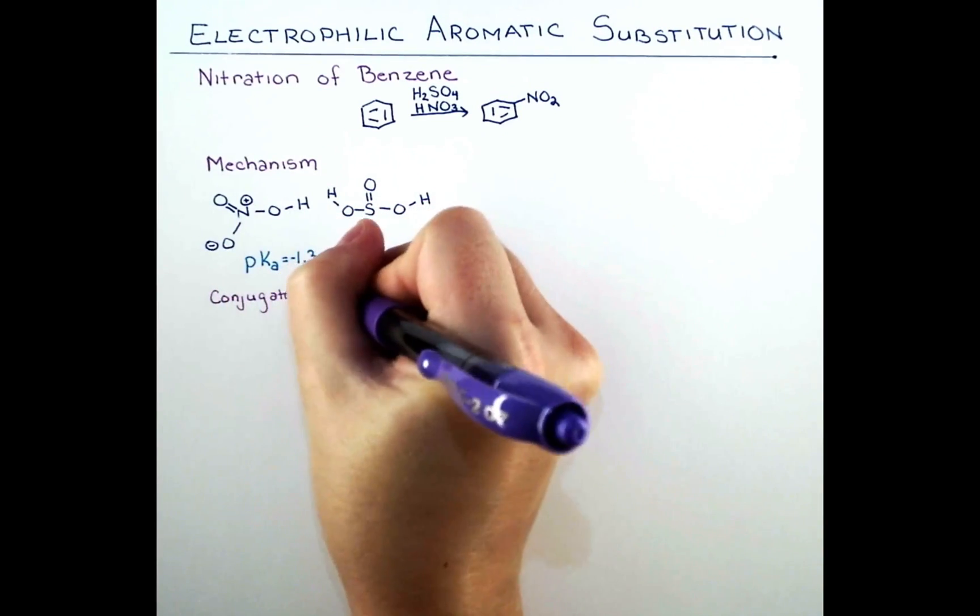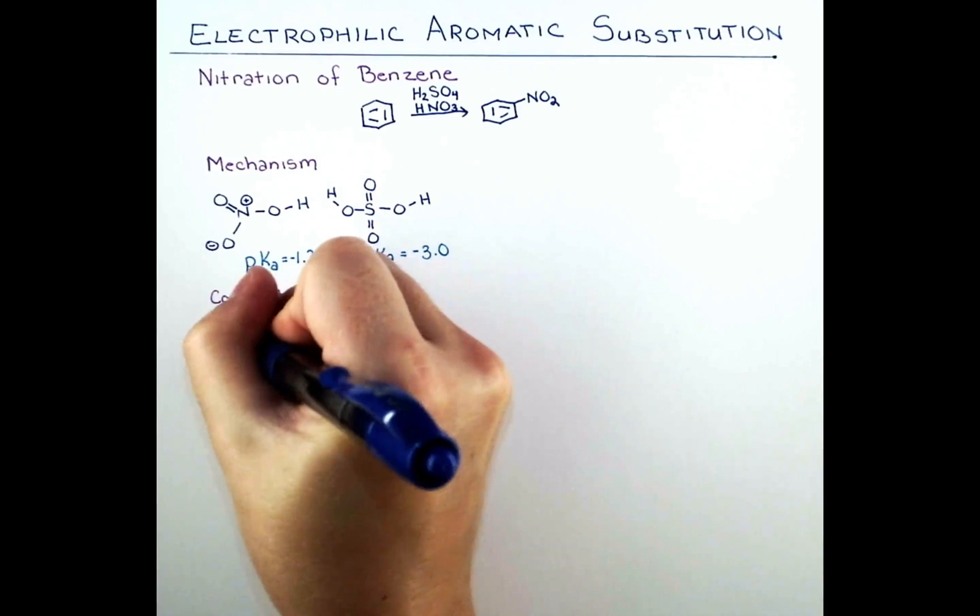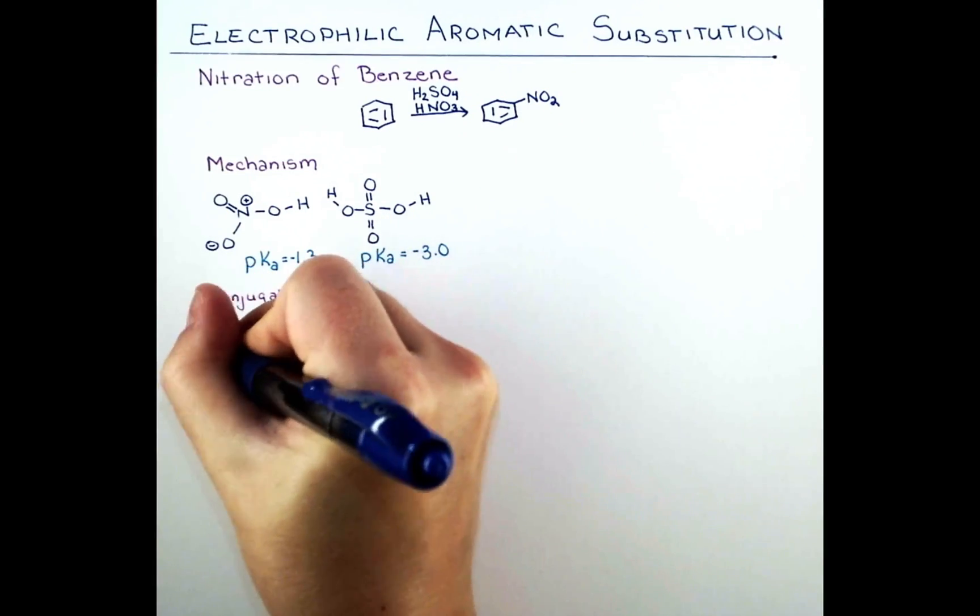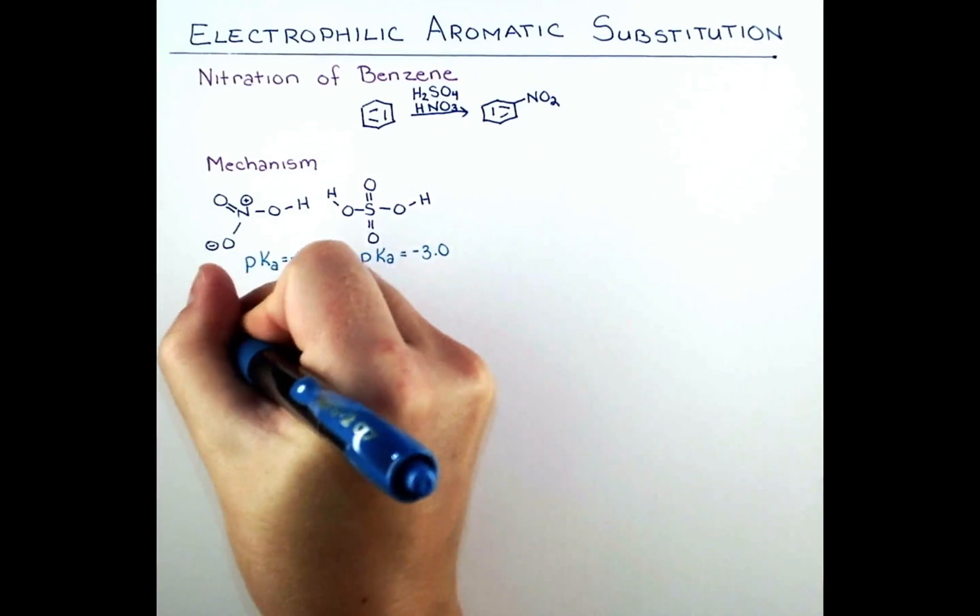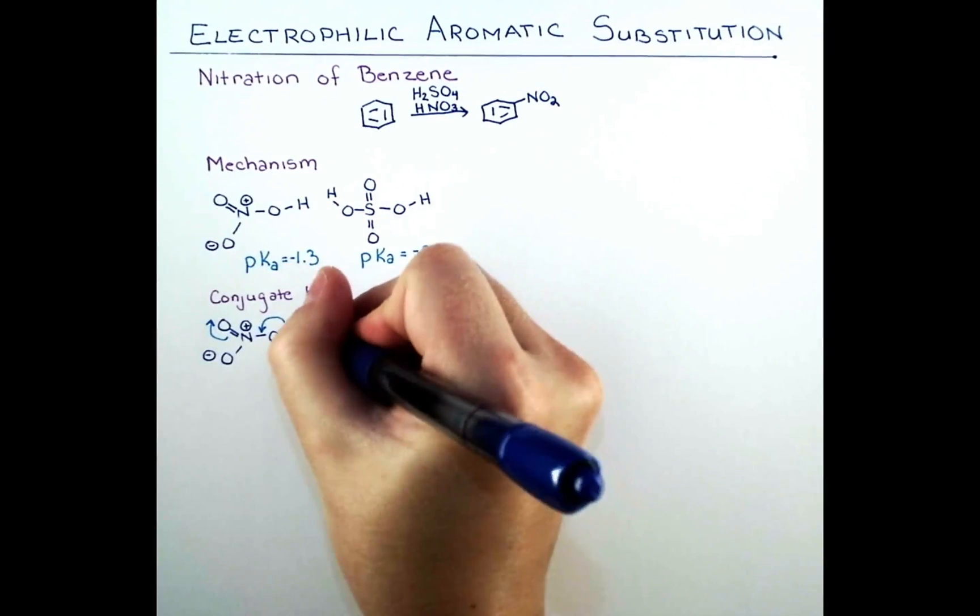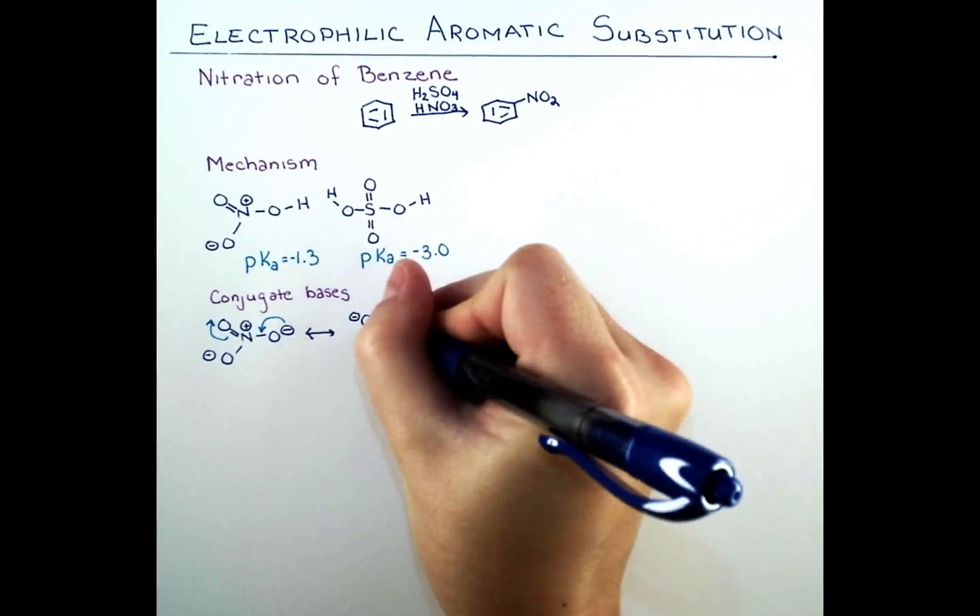Remember, when the conjugate base of any acid is more stabilized, the compound is more likely to give up a proton because it has stabilization when that proton is gone. Let's take a moment to look at the resonance forms of nitric and sulfuric acid and see if we can rationalize sulfuric acid being the stronger acid.